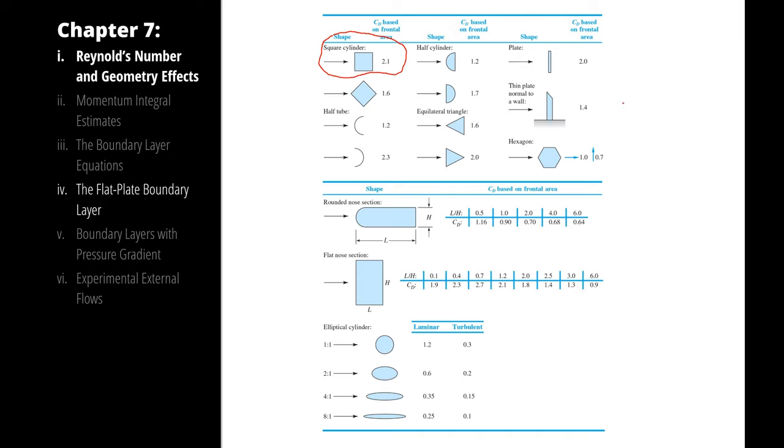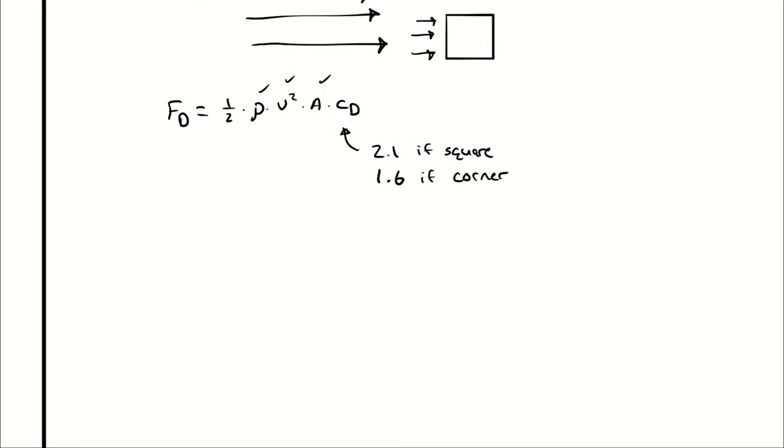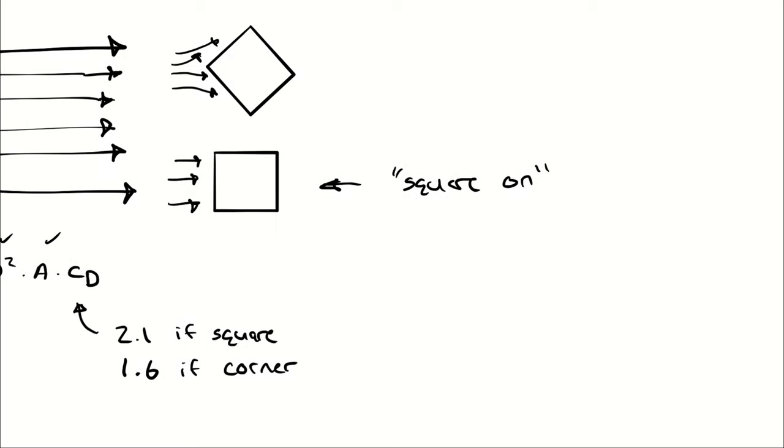Our coefficient of drag is 2.1 if it's dead on, and 1.6 if it's coming from one of the corners. So I will call this orientation square on, and I will call this orientation diagonal.